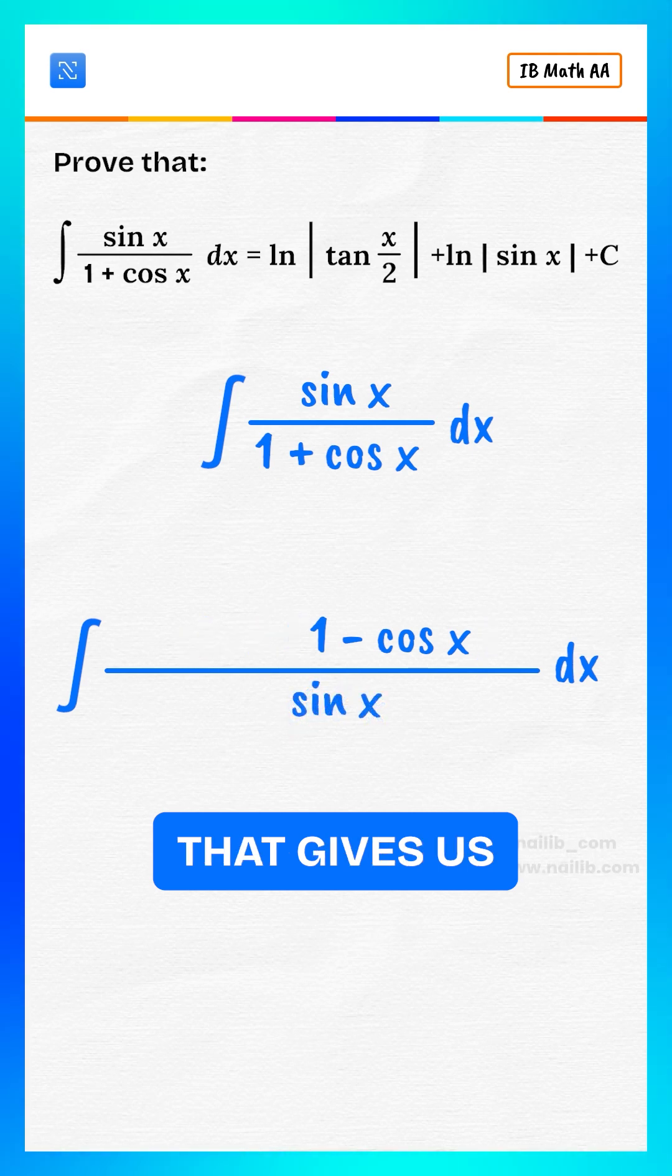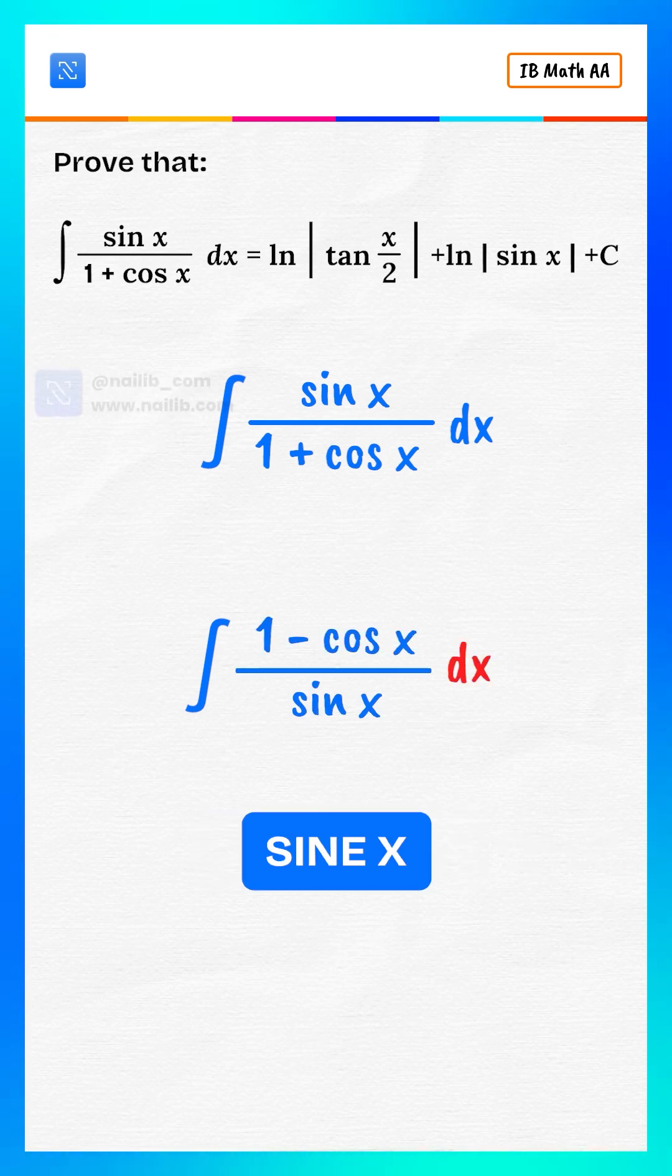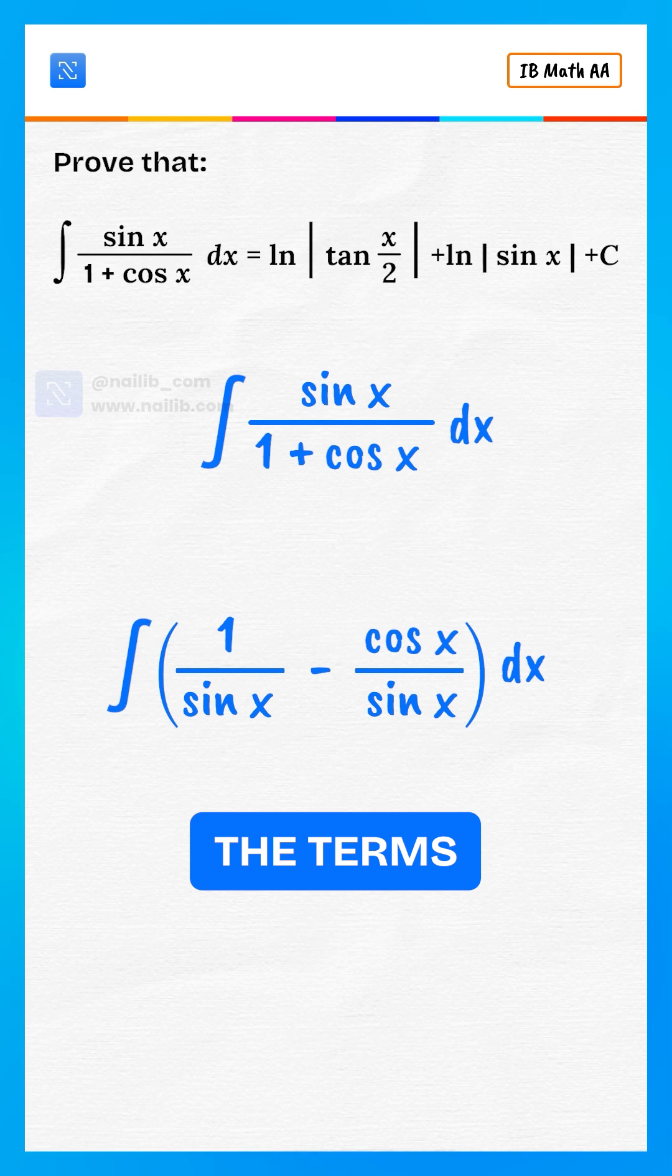That gives us the integral of 1 minus cosine x divided by sine x with respect to x. Now, split the terms.